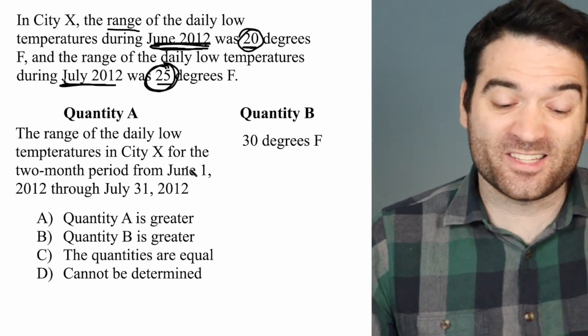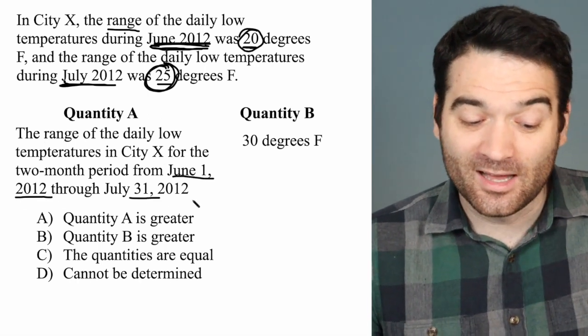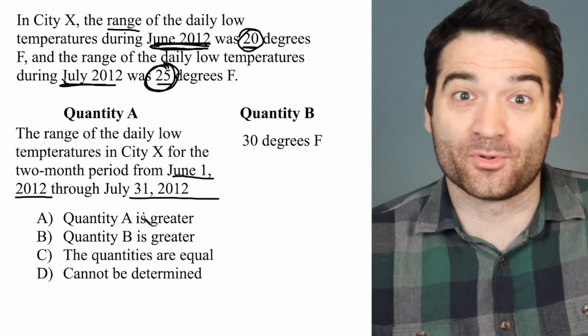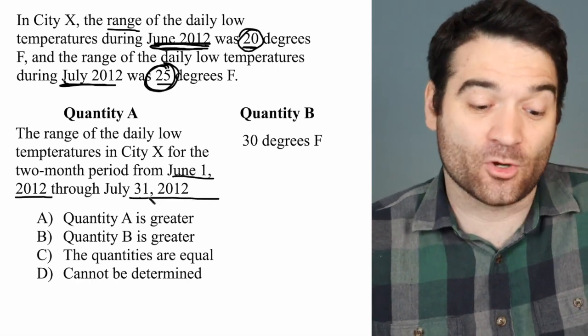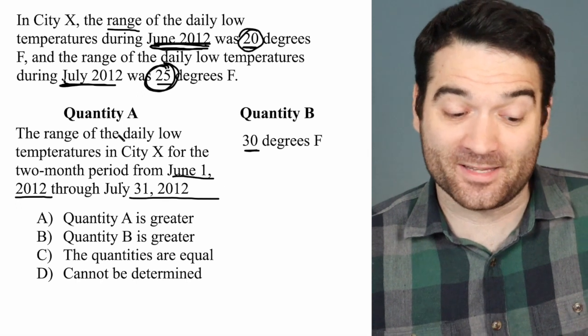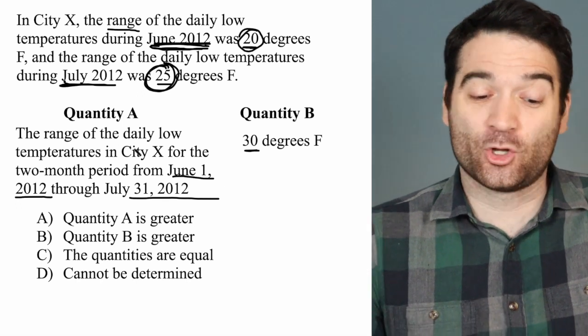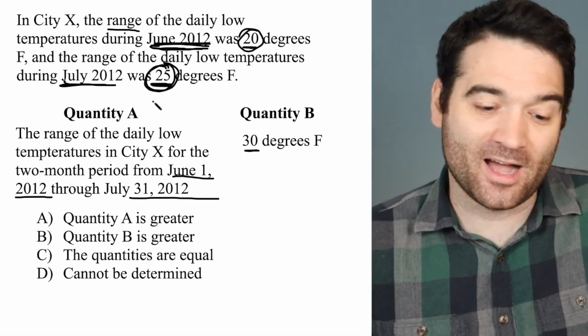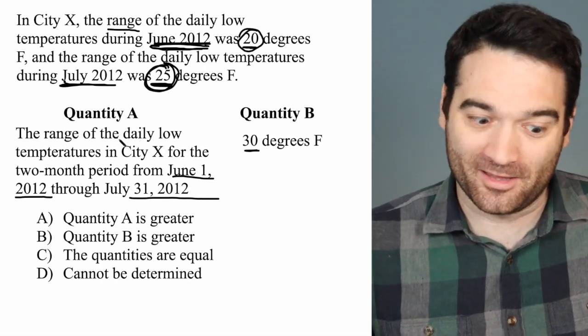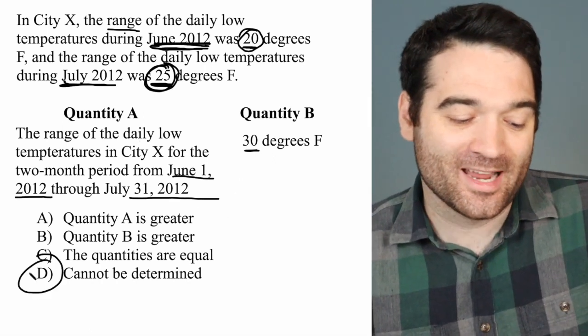So if I want the range of this entire period, I would have to know what the numbers in that period were, and I don't have them. So I can't compare it to 30 degrees because the range could be a minimum of 25, could be a maximum of anything. So the correct answer here is D.